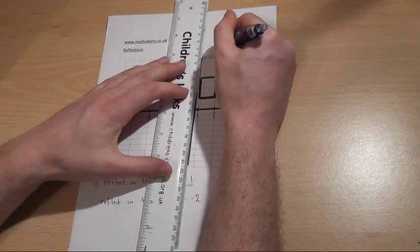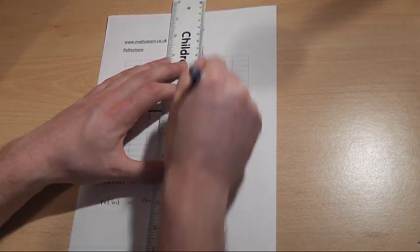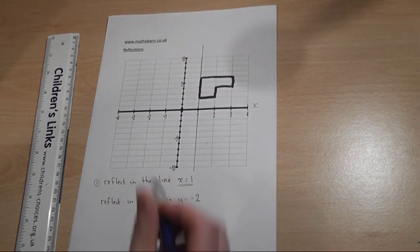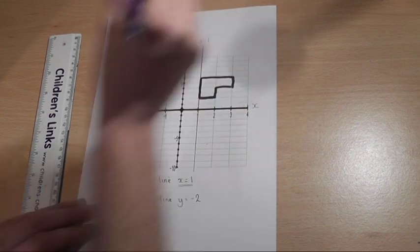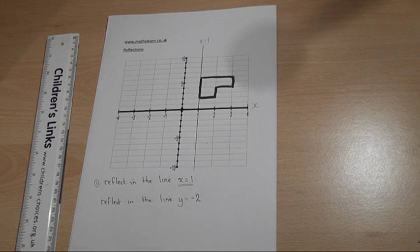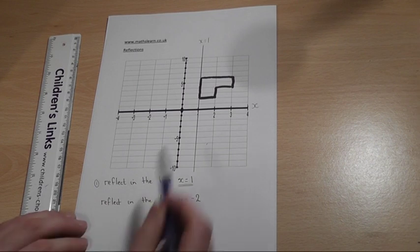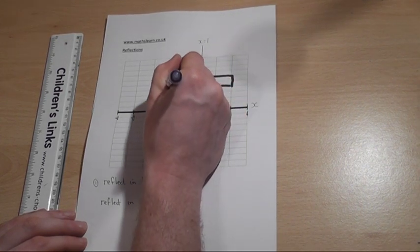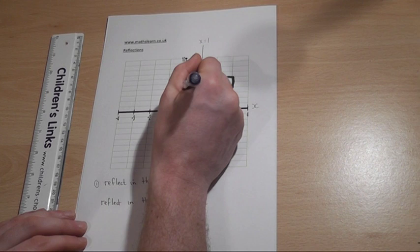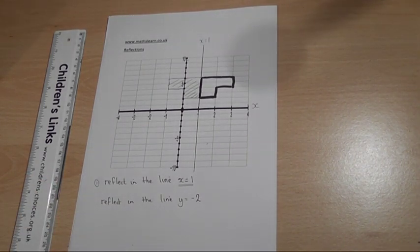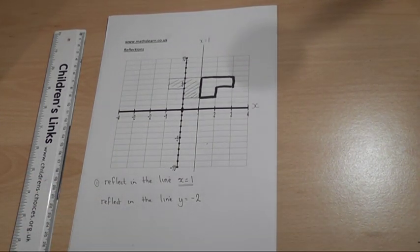Now, this line here refers to all the coordinates where x is equal to 1. So this is the line x equals 1. It is a vertical line passing through 1 on the x-axis. So if I want to reflect this shape in the line x equals 1, I just want to flip it over and produce a mirror image about this line. And it's as simple as this. Perfect symmetry about the line x equals 1.